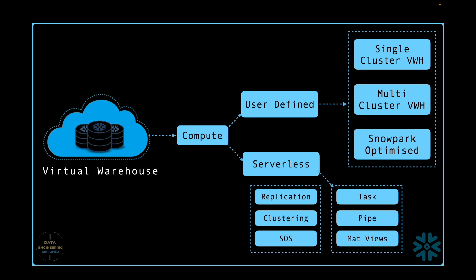Task is an exceptional object where it can go with serverless compute or with user-defined compute. There are other services that use serverless compute, like data replication across regions, auto-clustering, and search optimization services, so-called SOS. Let's go to the Snowsight WebUI and start with user-defined virtual warehouses to understand how you can create single-cluster, multi-cluster, or snowpack-optimized user-defined compute.